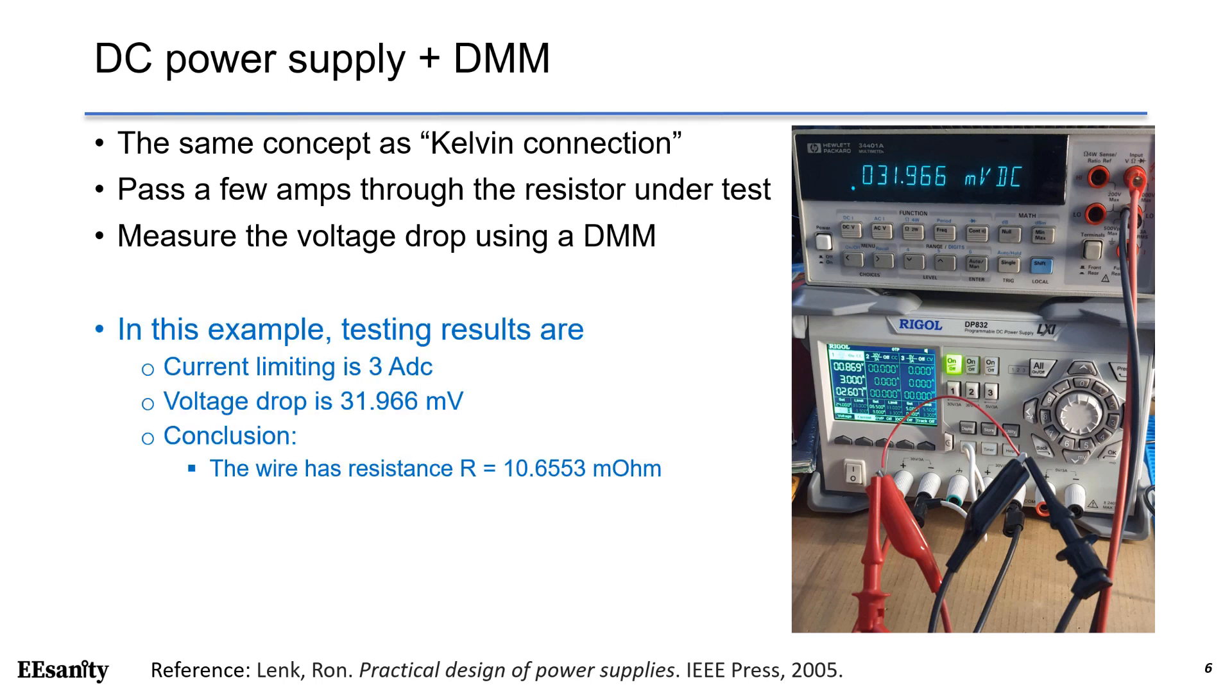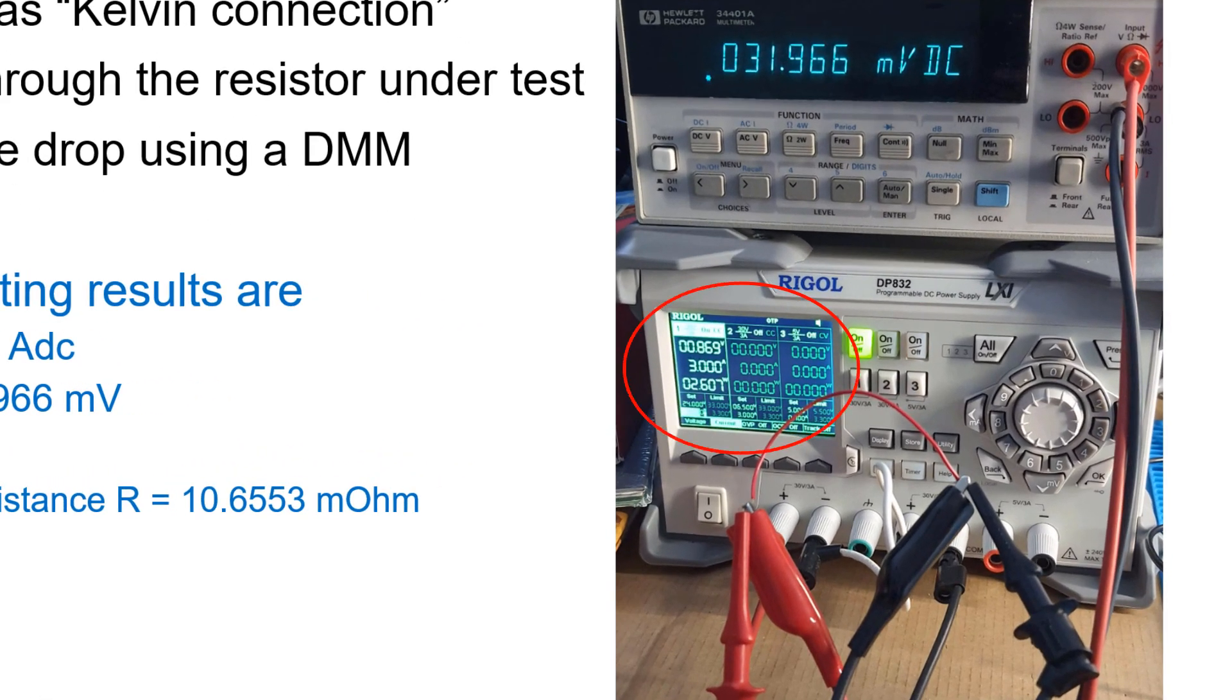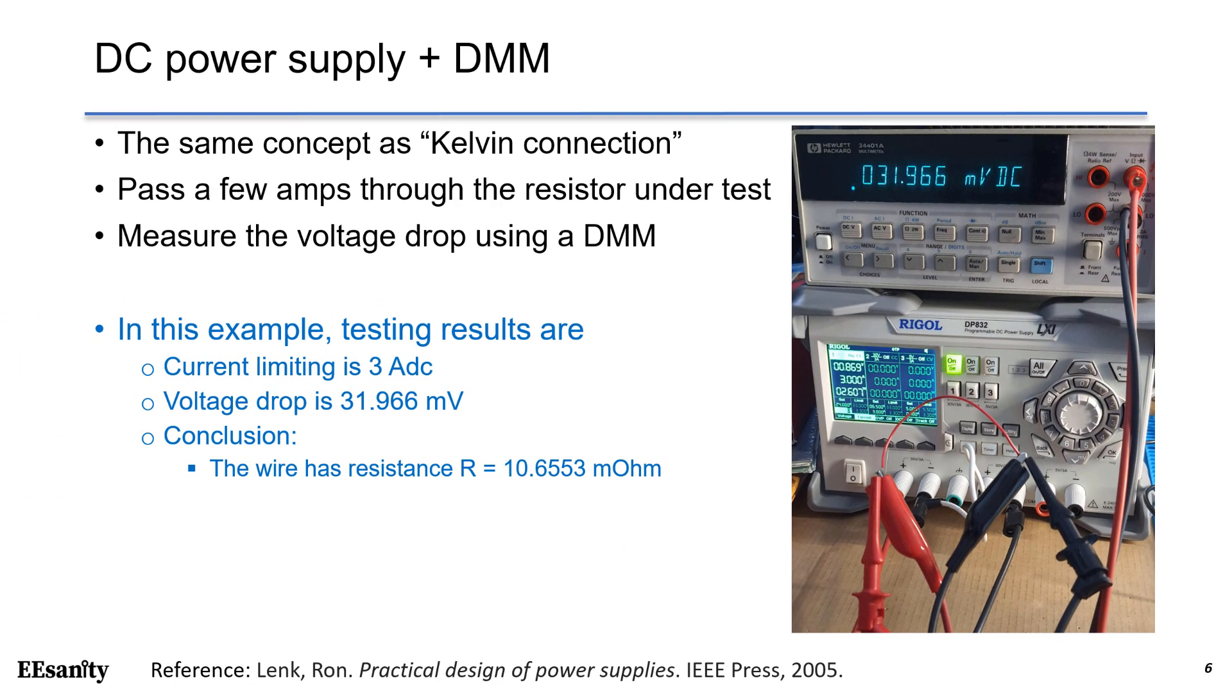Here are the test results. We put the current limit over this DC bench power supply at 3 amps DC. We measure the voltage drop at 2 ends of the wire by a digital multimeter. The reading is at 31.966 mV. As a result, the wire has resistance about 10 milli-ohm.